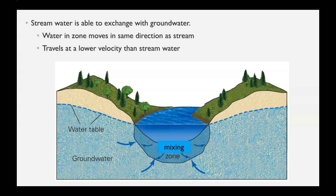There is an exchange with a permanent stream between the groundwater and the surface water. Sometimes the stream can be a gaining stream and gets water from the aquifer, and sometimes it's a losing stream and loses water to the groundwater. The stream is going to have a faster velocity than the groundwater, since the water has to flow through all the pore spaces. That depends on the gradient and the permeability of the aquifer.